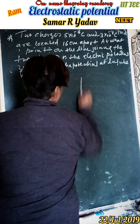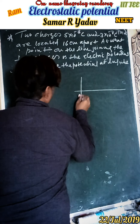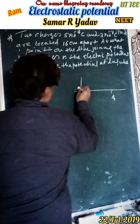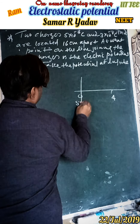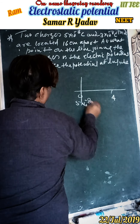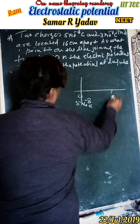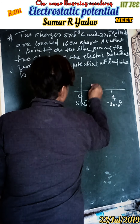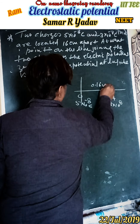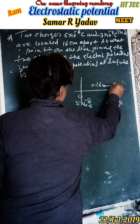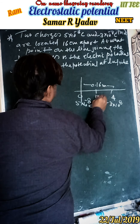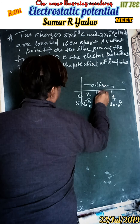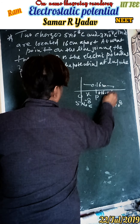Suppose this is point O and this is point A. At point O the charge is 5 times 10 to the power minus 8 Coulombs, and at point A the charge is minus 3 times 10 to the power minus 8 Coulombs. The distance between them is 0.16 meters. Suppose point P is where the potential will be zero, and this distance is 0.16 minus x.